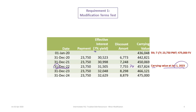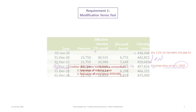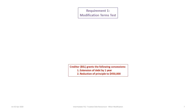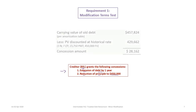The balance at December 31st, 2022 is the same as January 1st, 2023. You could do an amortization table using the seven percent yield rate used to calculate the original present value, however you can also recalculate using 2N as the number of payments remaining. This gives a present value of $457,824. The creditor BSL grants Flockhart two concessions: extend the debt by one year, and reduce the principal from $475,000 to $450,000.